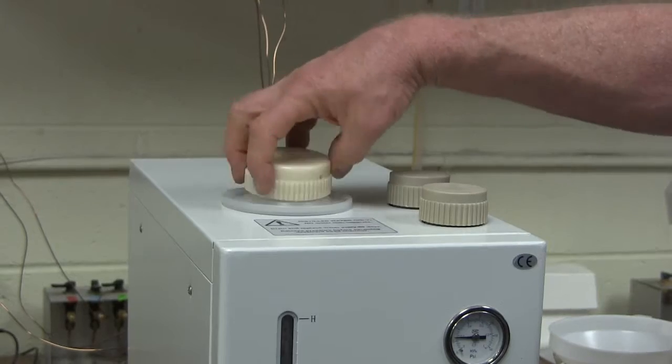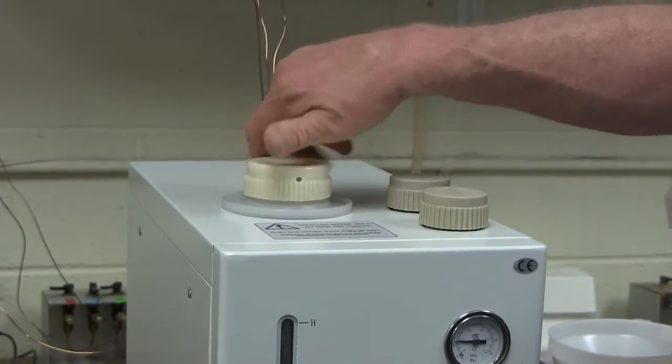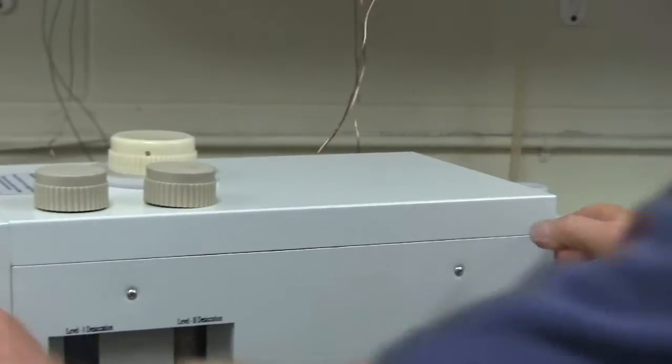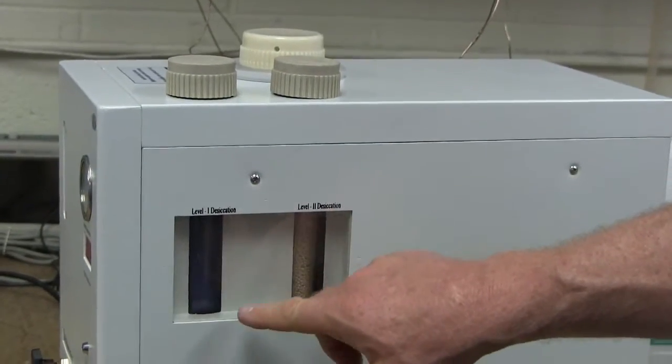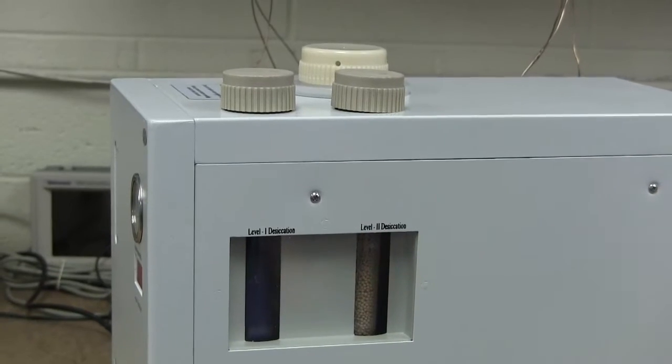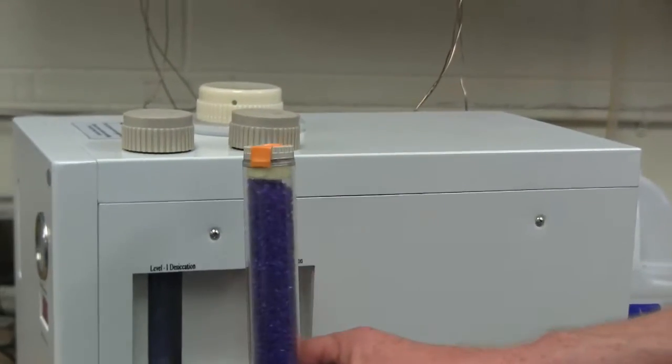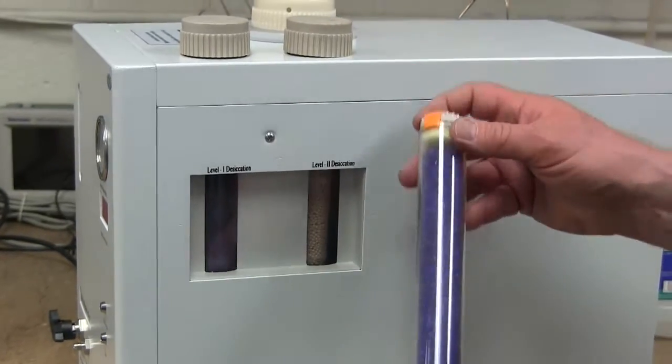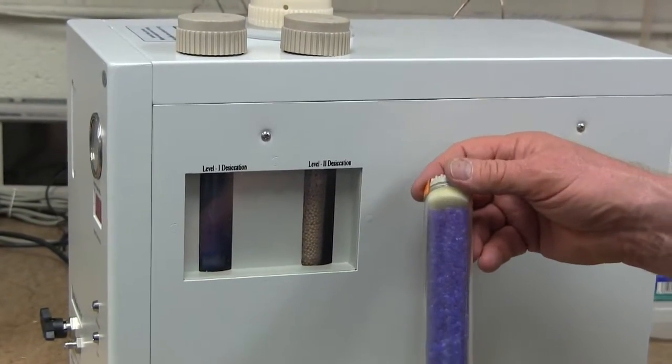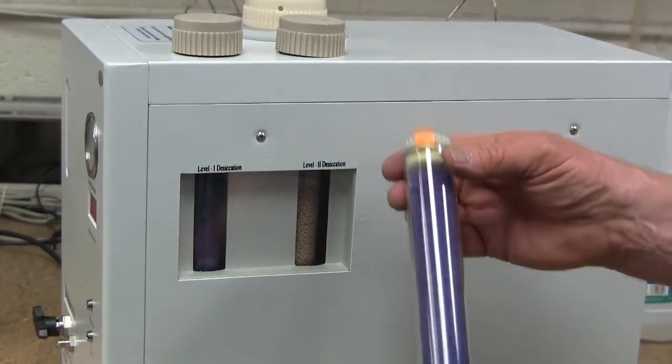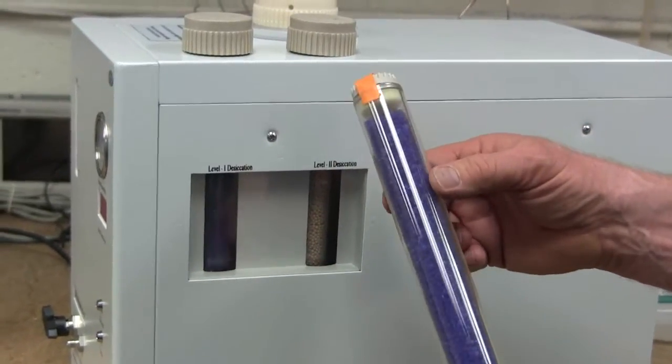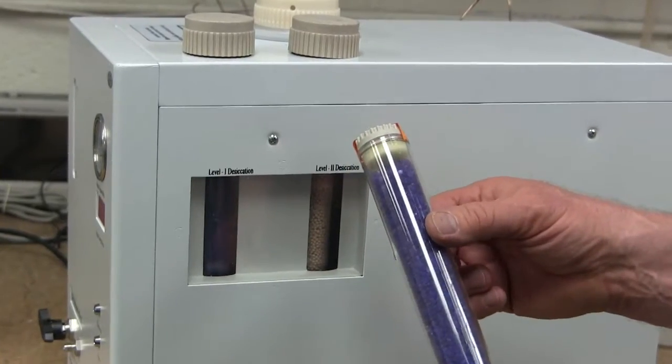So when it makes the hydrogen, the hydrogen has a little bit of water vapor in there. And on the side of the hydrogen generator, there's two hydrogen dryers. There's this first hydrogen dryer, which is filled with something called silica gel. The silica gel is purple when it's dry, and it's pink when it's wet. So when this color turns pink, that's your signal that you need to regenerate the silica gel.